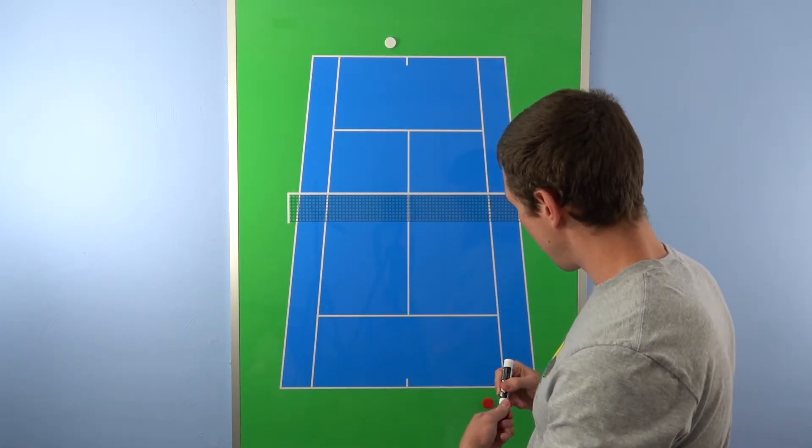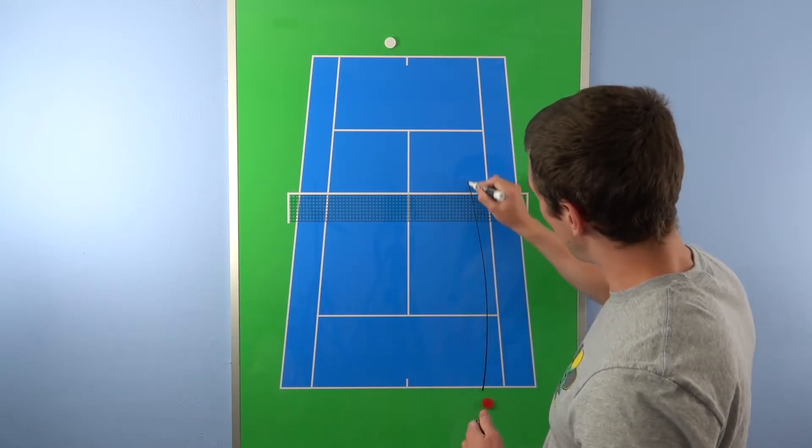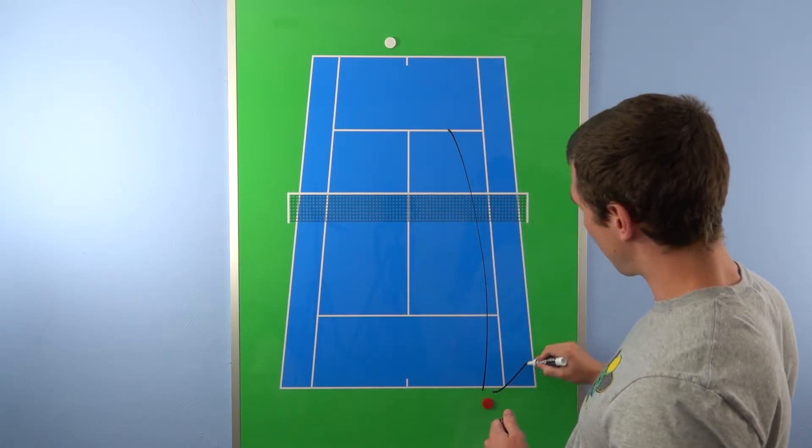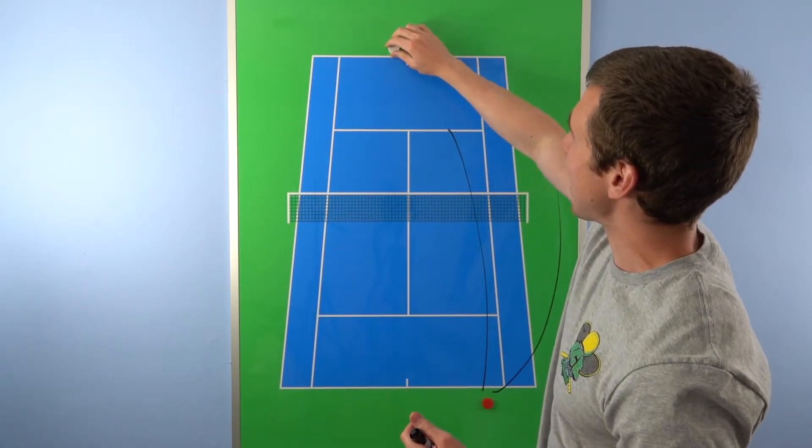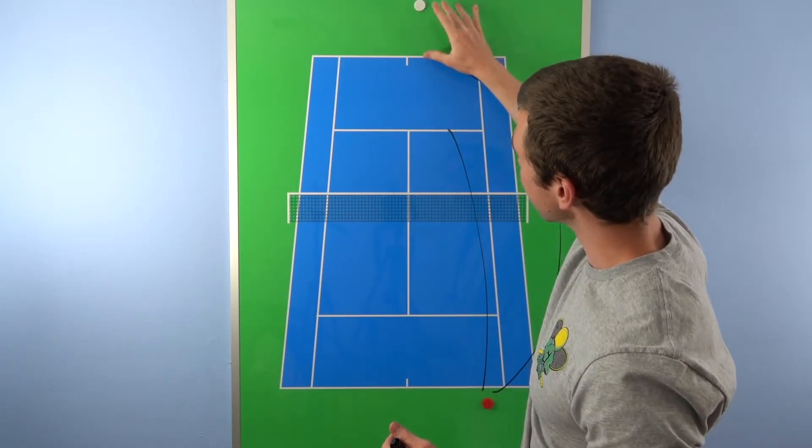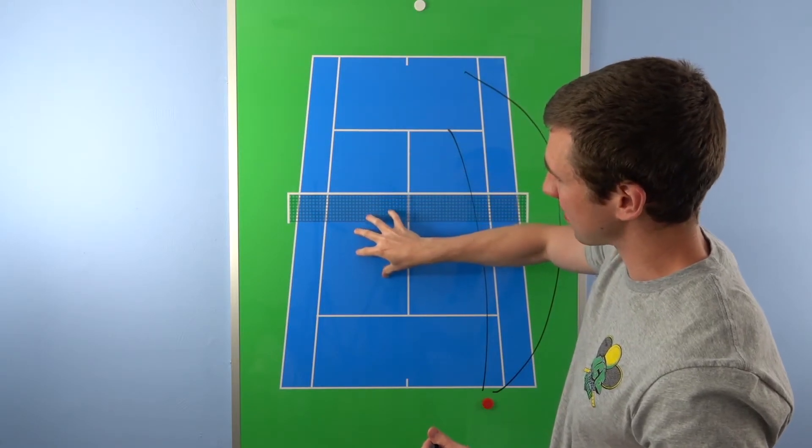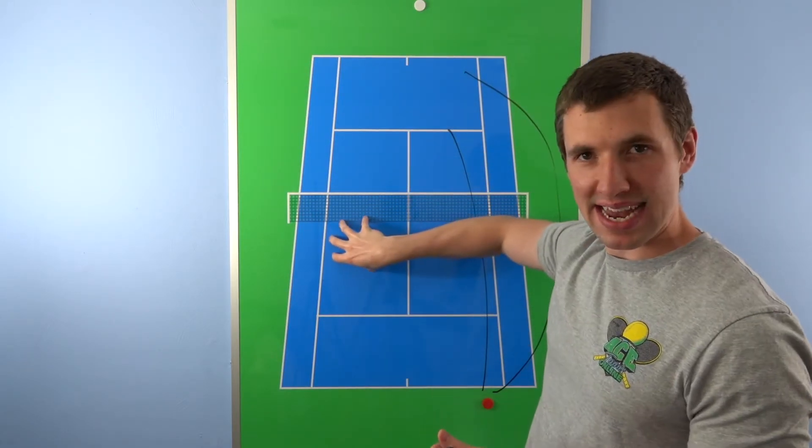So instead of going for that lower, shorter shot, let's go for a higher, loopier shot that gets depth. Now depth is an incredibly powerful tool to prevent your opponent from going on offense. So if you hit the high shot down the line, that makes a complete difference, because now you're going to end up pushing them back and they're probably going to end up coughing something shorter and now you can attack.